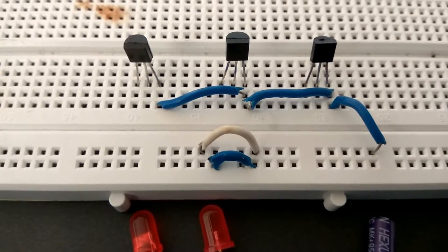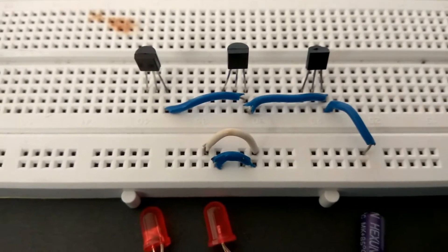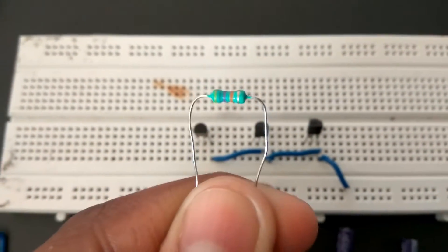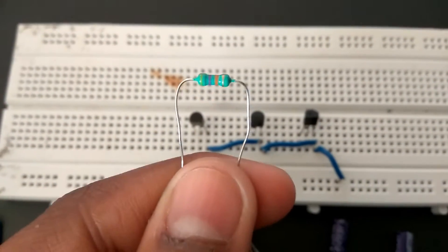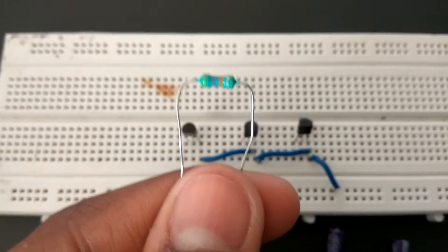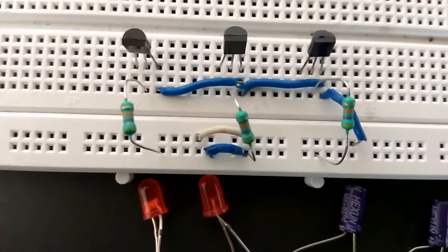Connect the bases of the transistors to the positive power supply using 47k ohm resistors. The color code for 47k resistors is yellow, purple, orange, gold. Gold indicates a quarter watt resistor.